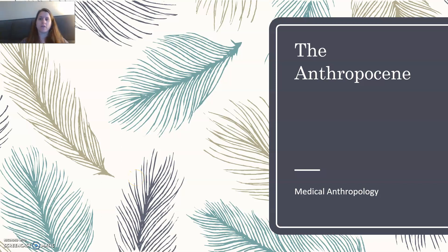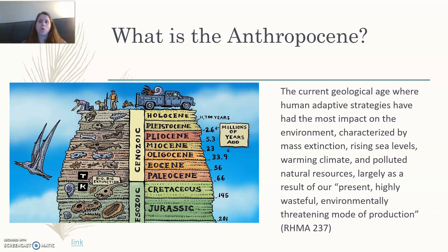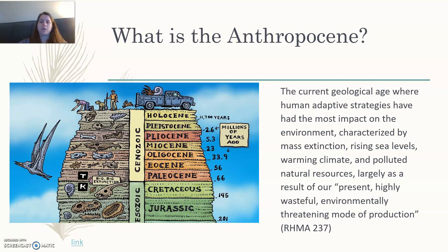Hi everyone, I'm here to talk about the Anthropocene for our unit in medical anthropology. What is the Anthropocene? It's a term that's come into popularity recently. If you look at a graph of the different eras in the history of the earth, humans don't appear until quite late. The Anthropocene is a new term describing the geological age where human adaptive strategies have had the most — and mostly negative — impact on the environment, characterized by mass extinction, rising sea levels, a warming climate, and polluted natural resources.